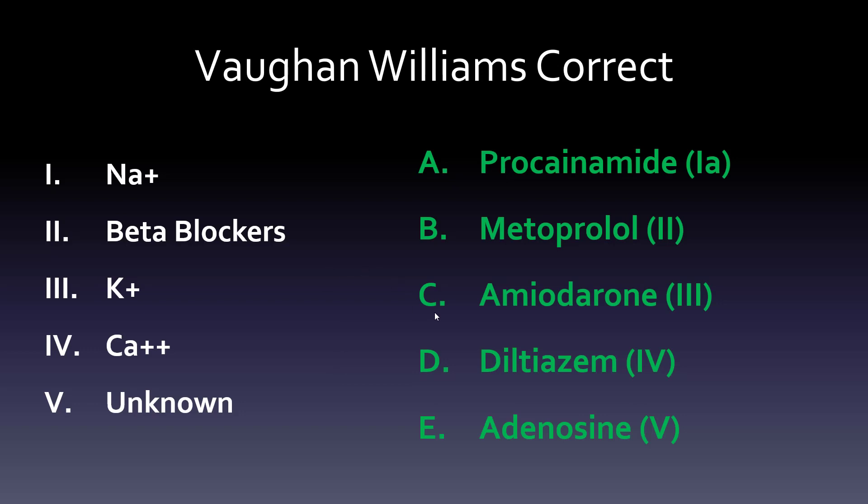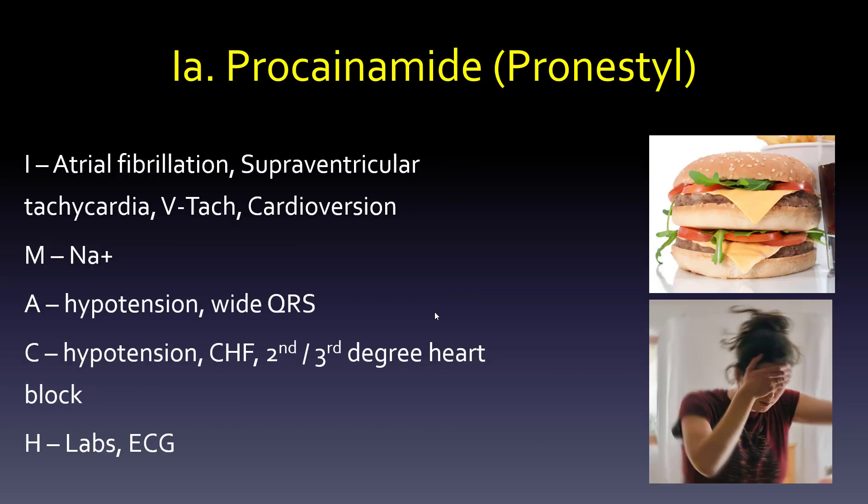Let's look at some characteristics. Group 1A procainamide — the P in the double quarter pounder — is good for atrial fibrillation, supraventricular tachycardia, and V-tach. It's really chemical cardioversion, and its mechanism is sodium channel blockade. The big adverse effect is hypotension, and it can cause a wide QRS. If hypotension is an adverse effect, we don't want to give it to a hypotensive patient. Contraindications include congestive heart failure and second- or third-degree heart block. Monitoring includes labs and ECG.